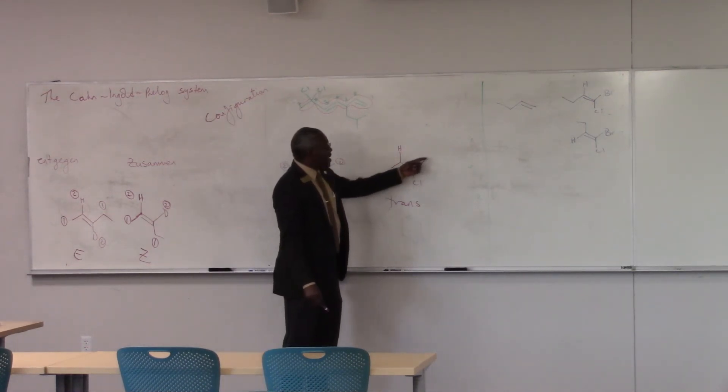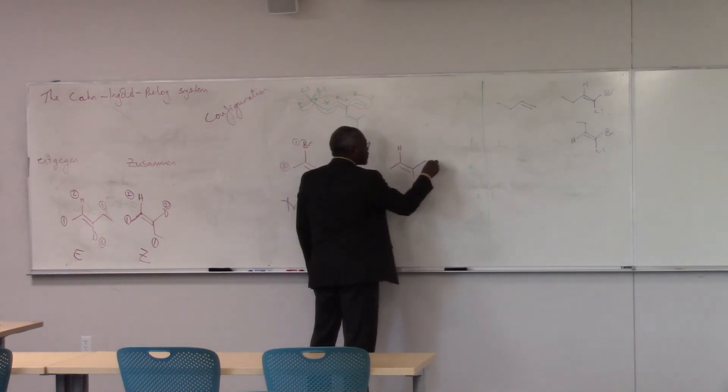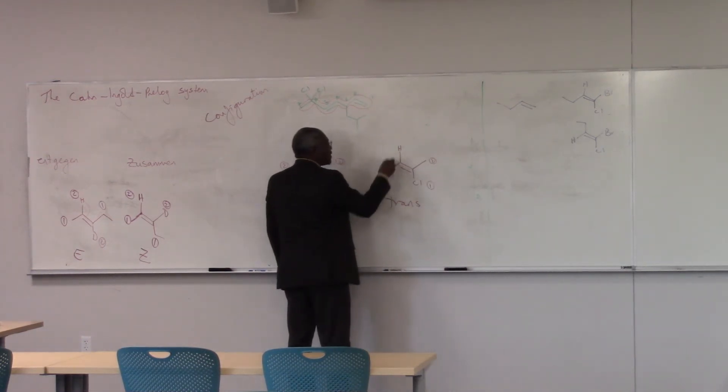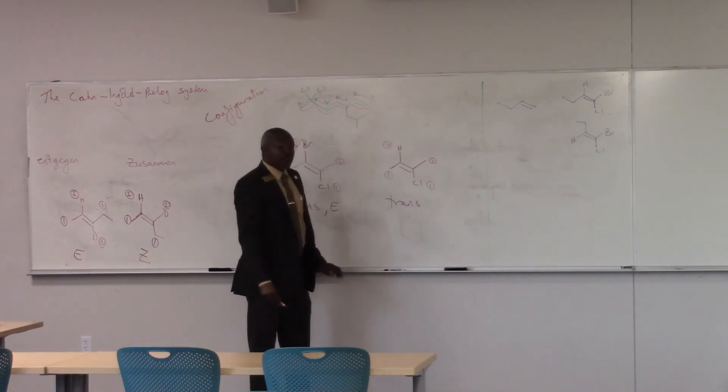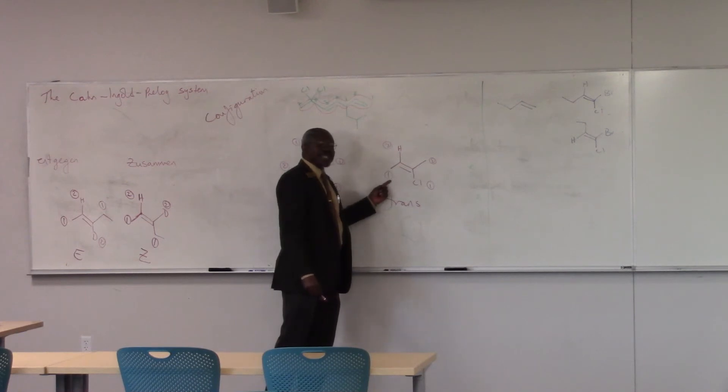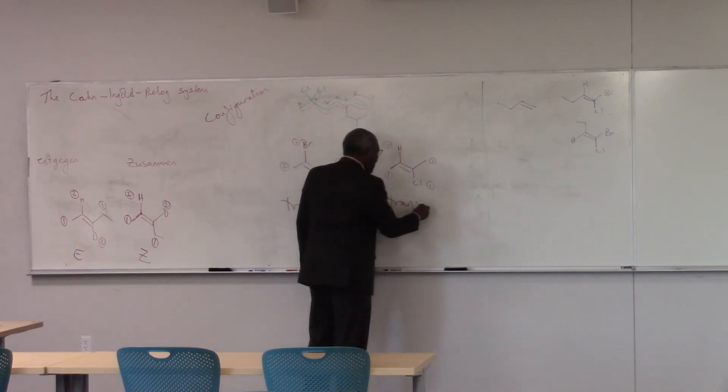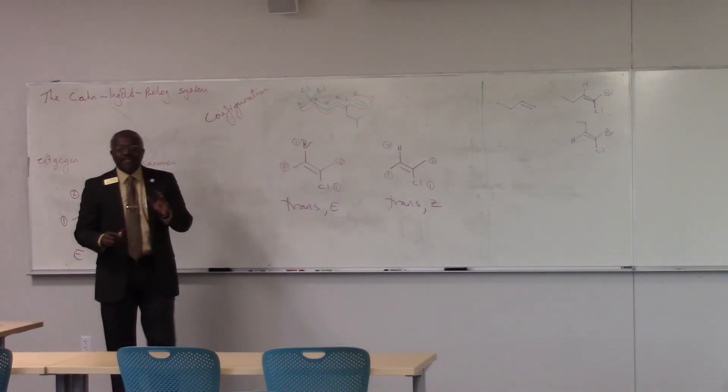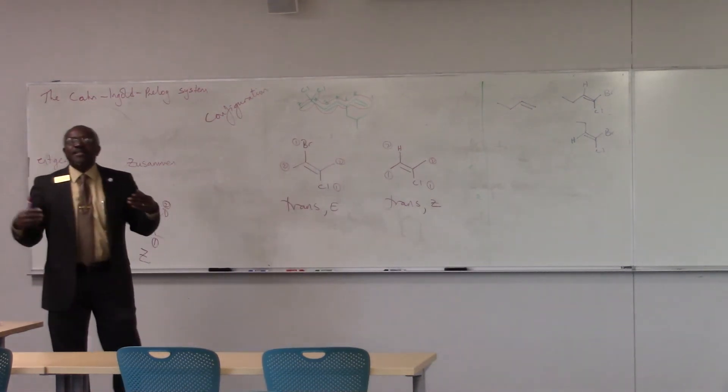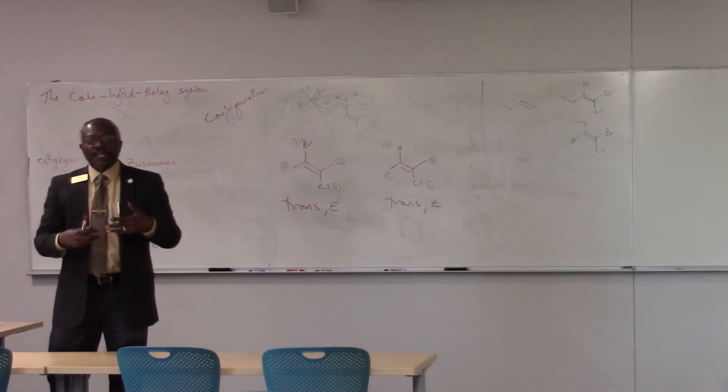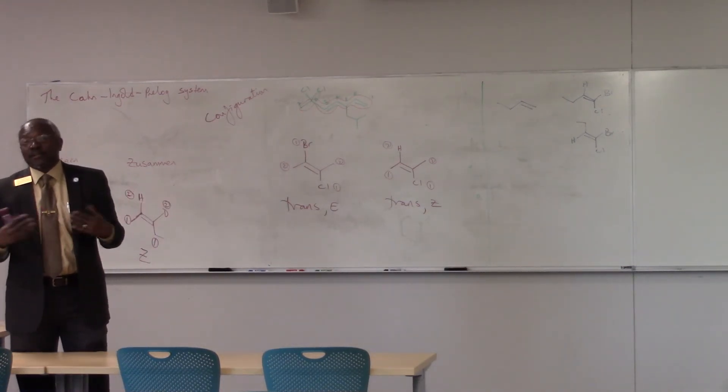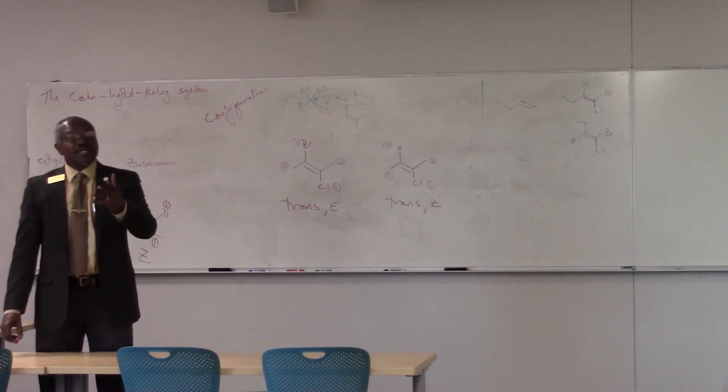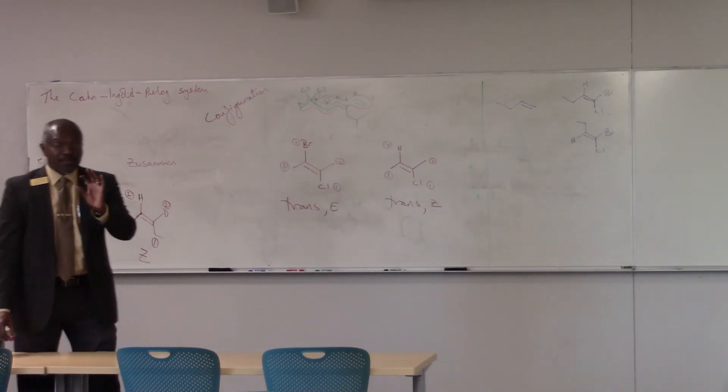So this is trans, because my methyls are on opposite sides. But in terms of priority, this is one, and that's two. This is one, and that's two. So in terms of E, Z, here my groups of like-priority are on the same side. So this is trans and Z. In other words, the point I'm making here is that trans does not mean E. Trans and E are not interchangeable terms. Neither for that matter are cis and Z. They're not interchangeable. Now, sometimes they're the same, right? Sometimes I can use either. But they're not interchangeable.